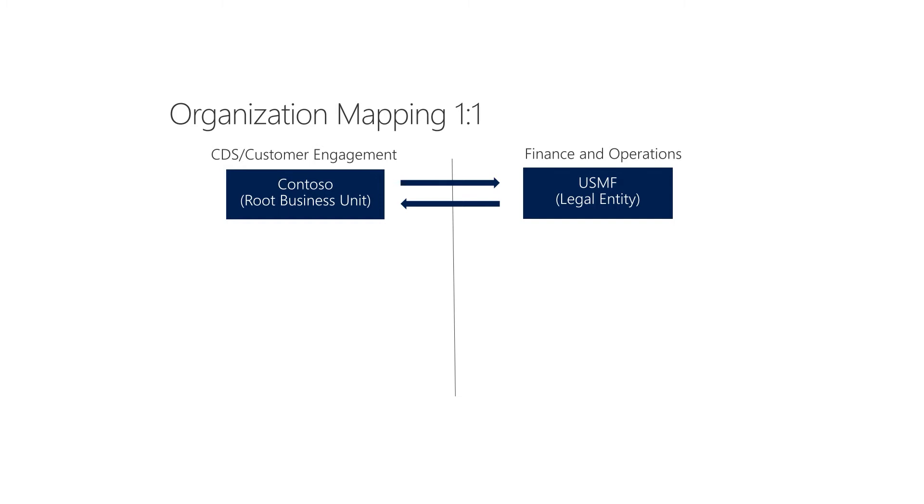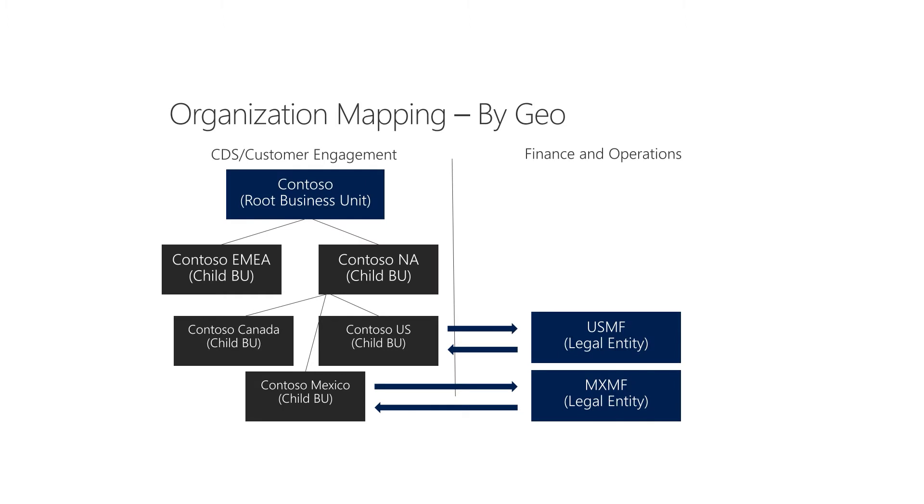Another downside similar to Dual Write is that all actions are performed within the context of an application user, so it's not possible to check which records a user is allowed to change in the target system. You also lose auditing capabilities because all modifications are logged in the context of the application user, not the actual user making changes. Another challenge is that the data model is often very different between Customer Engagement and Finance and Operations. Microsoft is working hard to even this out for Dual Write, but there are no signs they plan to address this difference for the Data Integrator.